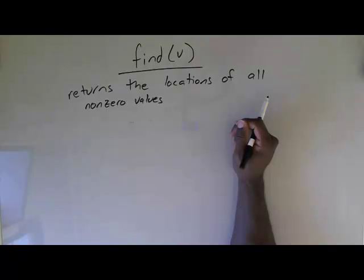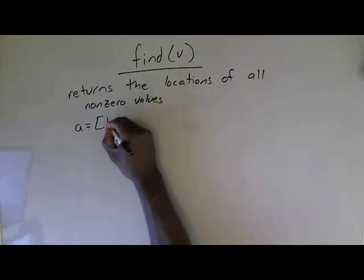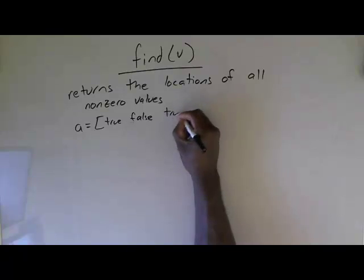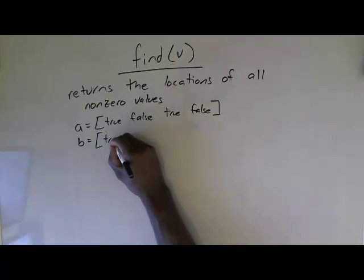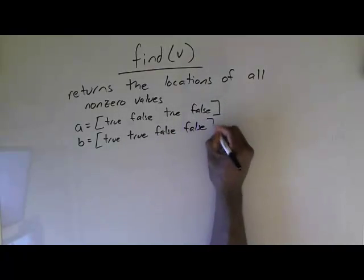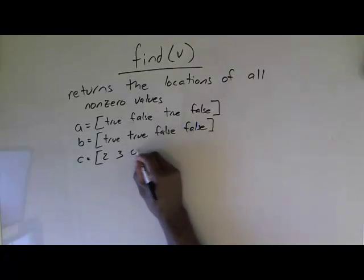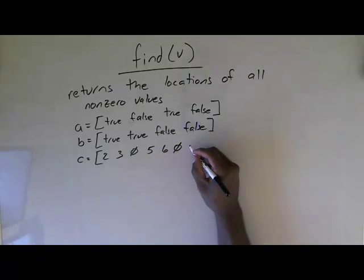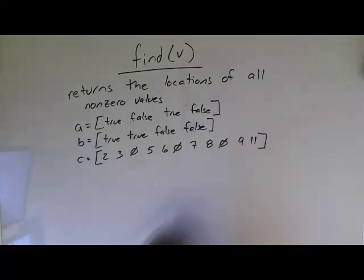Let's start off with boolean — it also works for double values as well. So let's define vector A equals [true, false, true, false], vector B equals [true, true, false, false], and vector C equals [2, 3, 0, 5, 6, 0, 7, 8, 0, 9, 11].